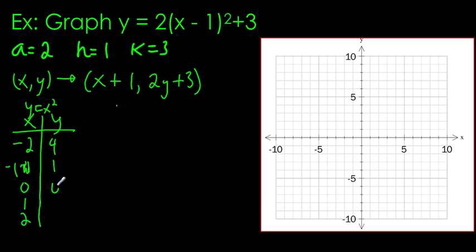So 4, 1, 0, 1, 4. And what our mapping rule is going to do, it's going to transform this table into something that we can graph.